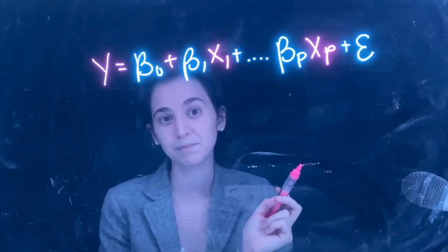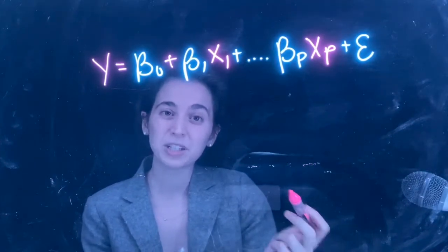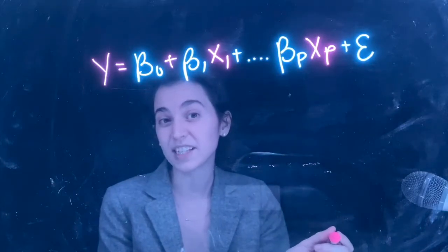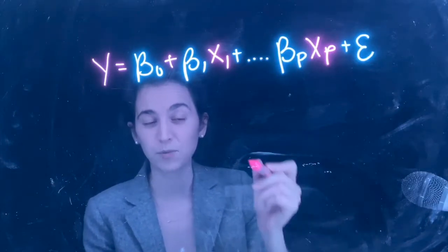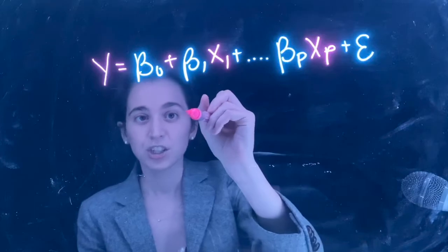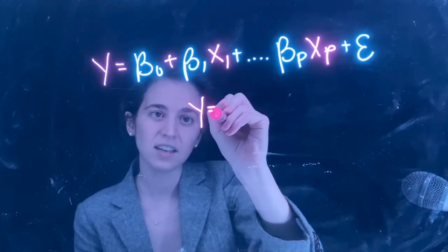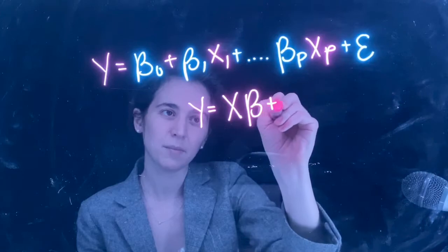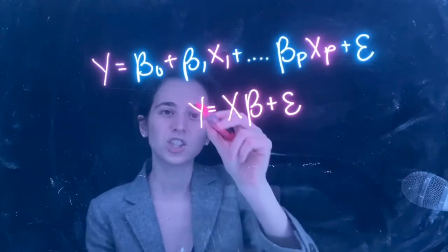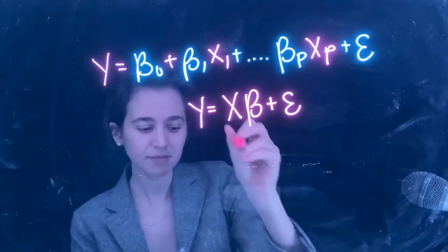Now the way that we're going to be representing this model most commonly in this class is in matrix form. So I'm going to go ahead and write that out now. That can be written as y equals x beta plus epsilon.